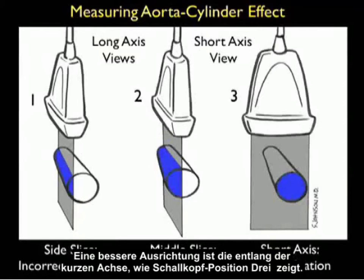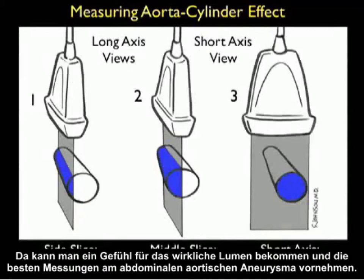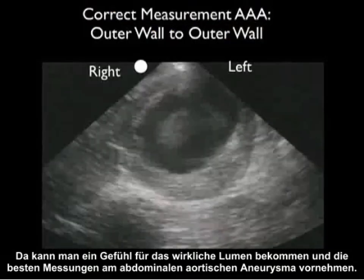A better orientation is to position the probe in the short axis configuration as shown in probe position three. One can then get a sense of the true lumen and get the best measurements of the abdominal aortic aneurysm.